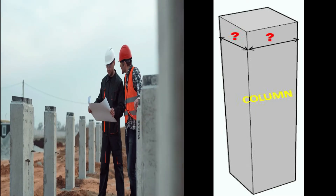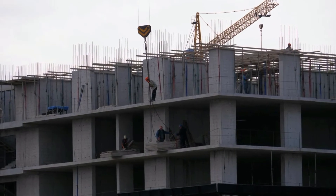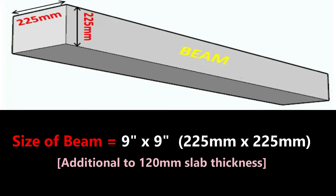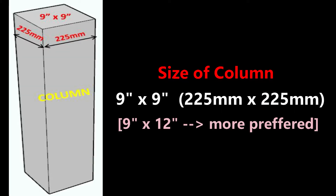For a single story building, the minimum thickness of slab to be used is 120 mm. The minimum size of beam to be used is 9 inch by 9 inch, that is 225 mm by 225 mm. This beam size is in addition to the 120 mm slab thickness.